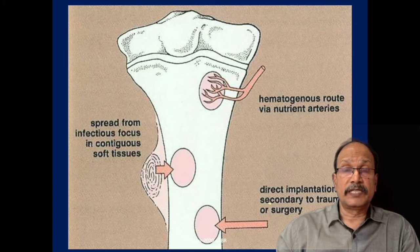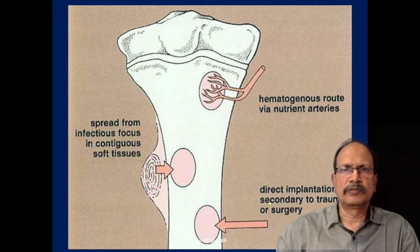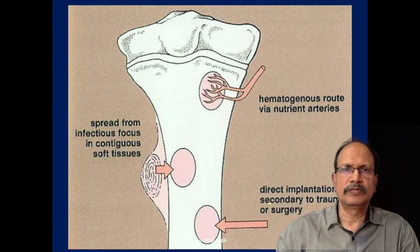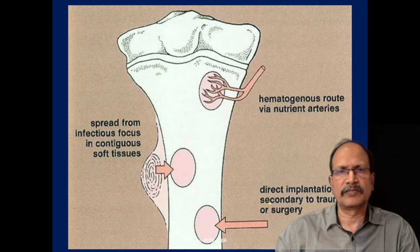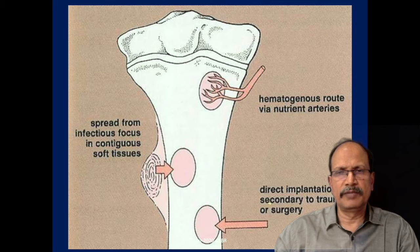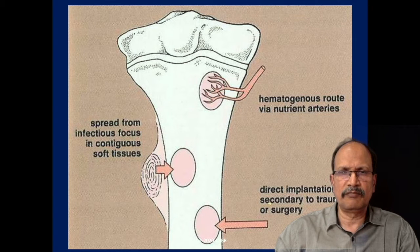This slide represents the modes of acquisition of infection of the bone. One is the hematogenous route, where bacteria come and lodge in the bone. Another is spread of infection from surrounding soft tissue due to its close proximity to the bone. Or it may be due to trauma and surgery, which introduces pathogens directly into the bone.